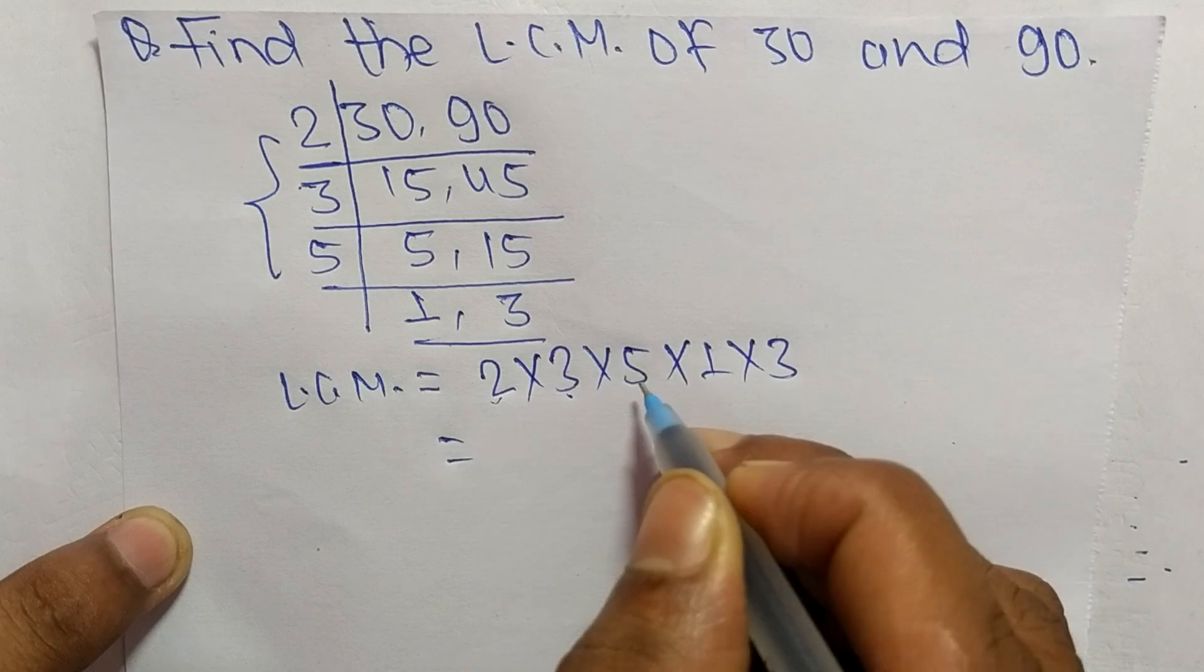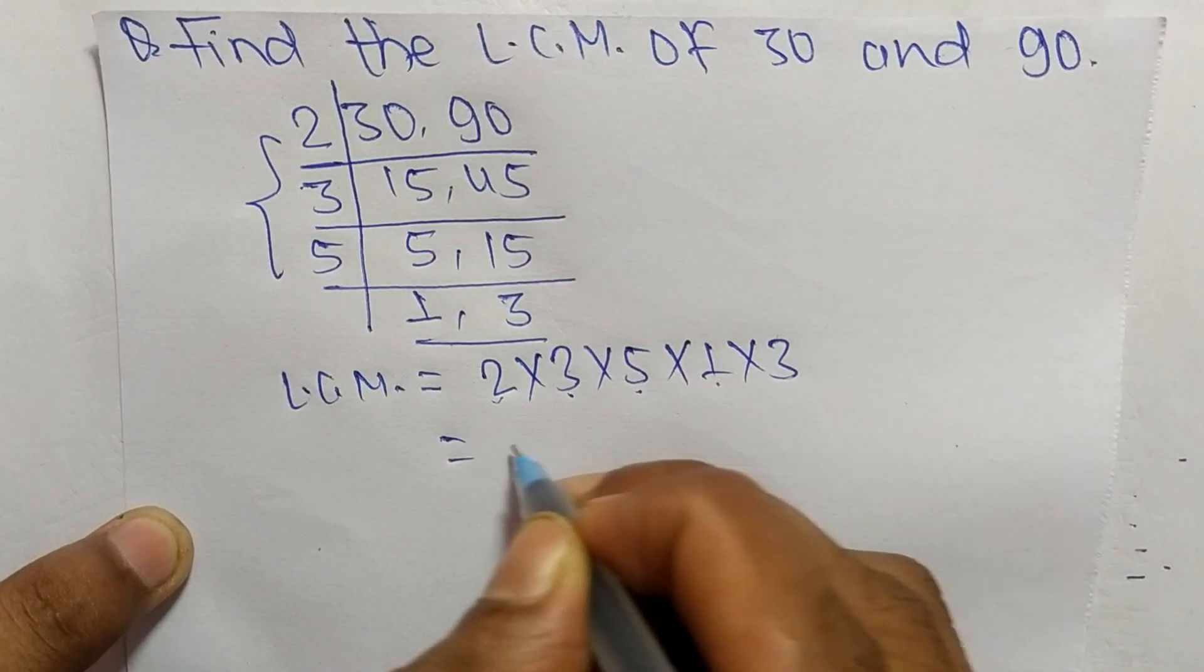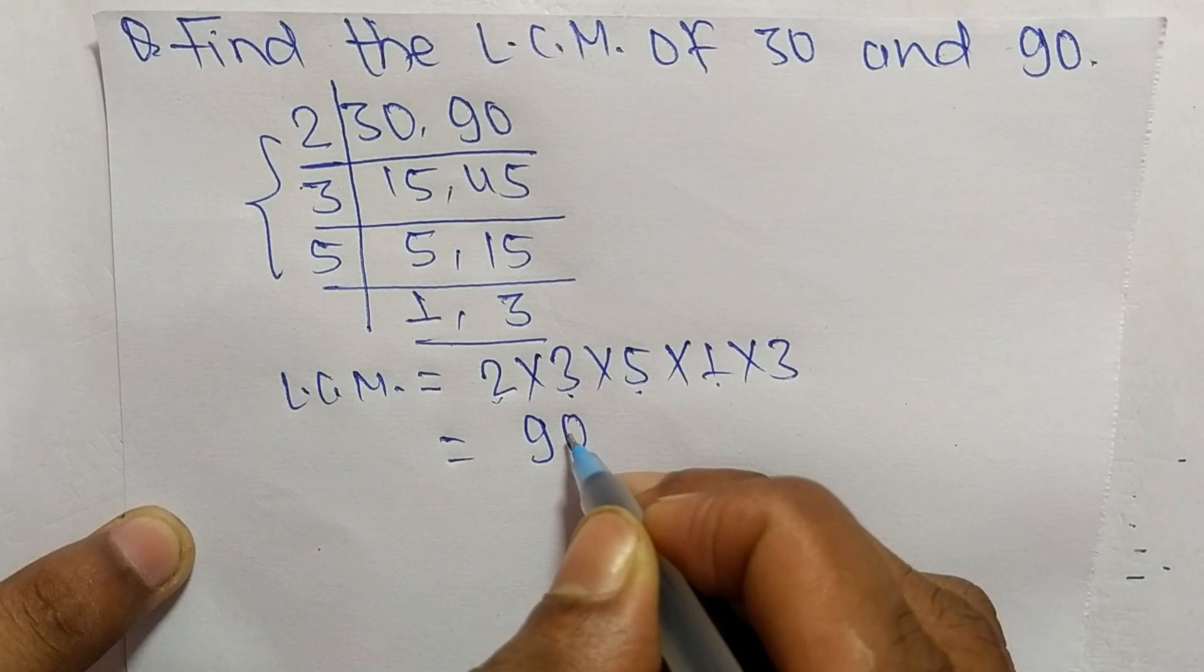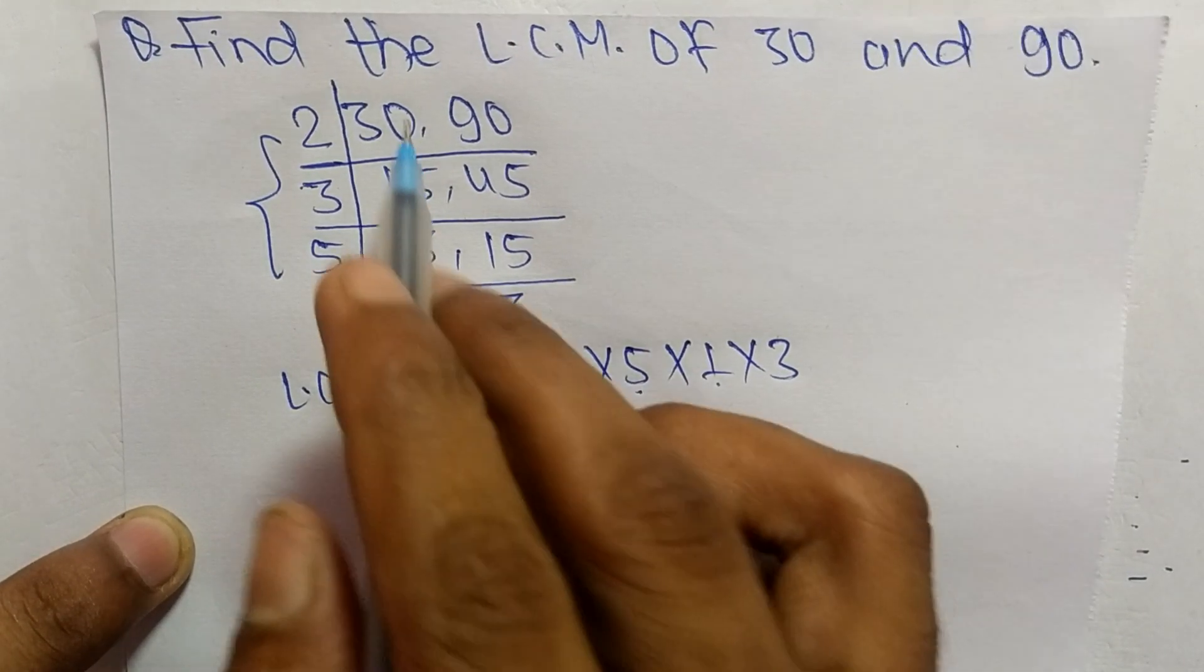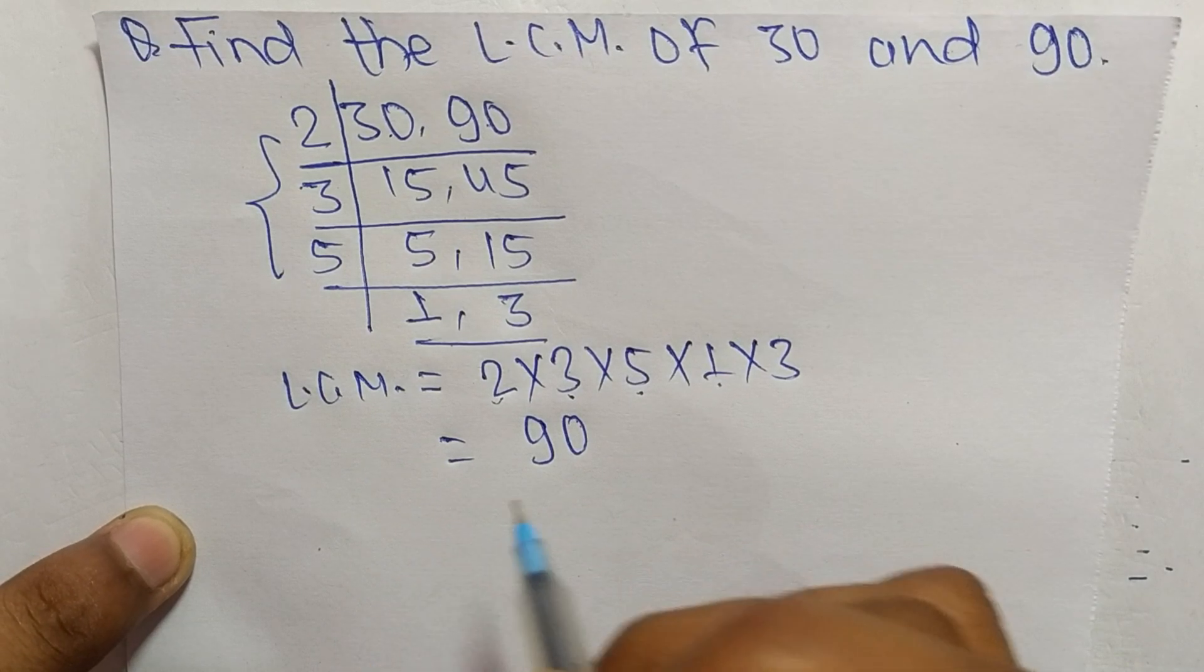6 times 5 is 30, times 1 is 30, times 3 means it is 90. So 90 is the LCM of 30 and 90. This much for today, and thanks for watching.